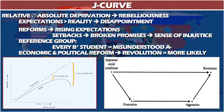Looking at the J-curve theory: the key insight is that people are driven not by absolute deprivation but by relative deprivation — their expectations are greater than reality, leading to disappointment. Over time, reforms may raise expectations, but something happens where reality doesn't keep pace: either expectations become unrealistic, or there's a setback and the bright future that was promised doesn't materialize.